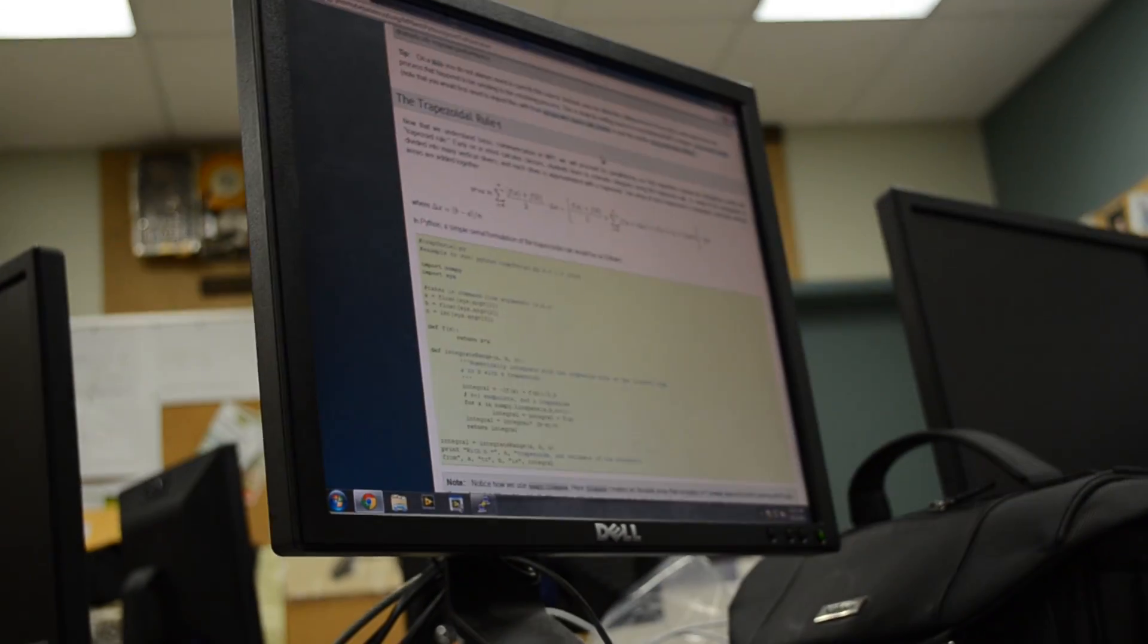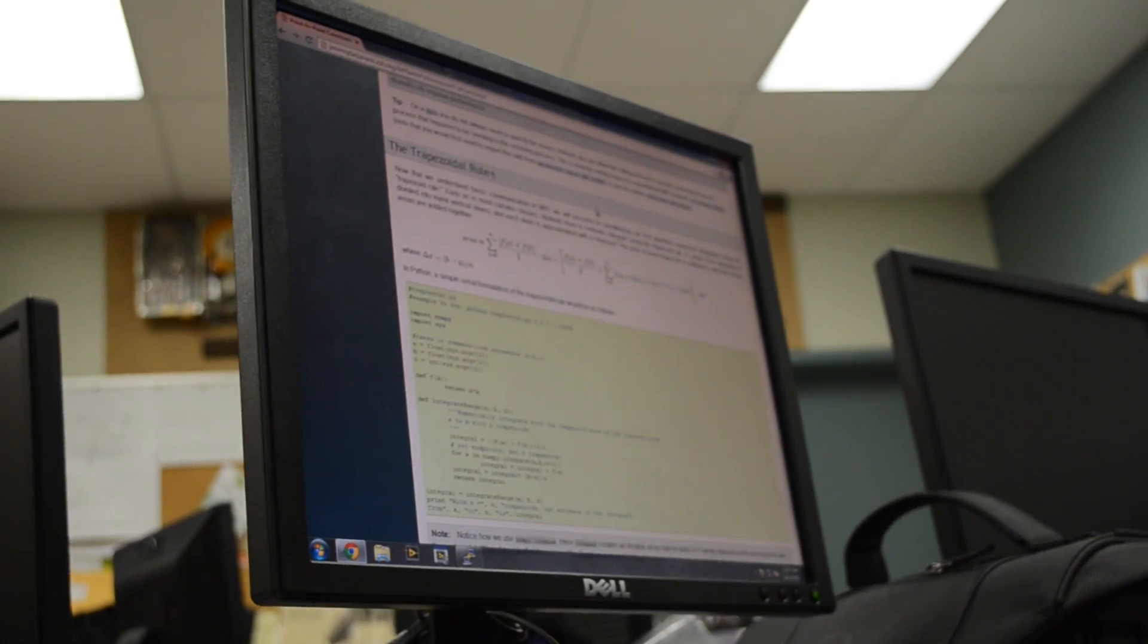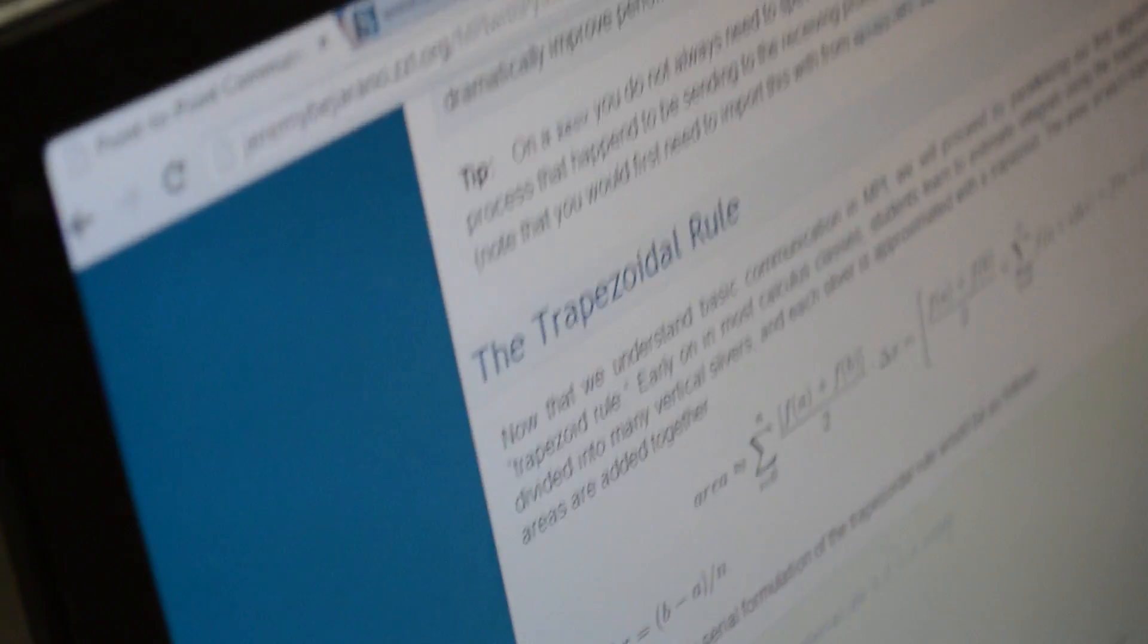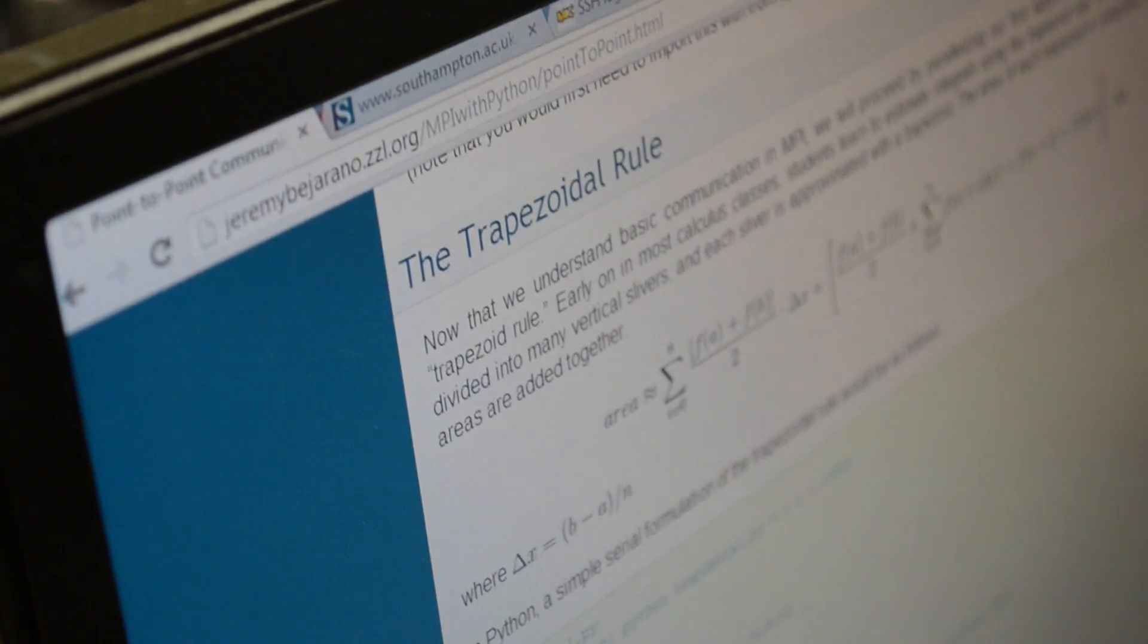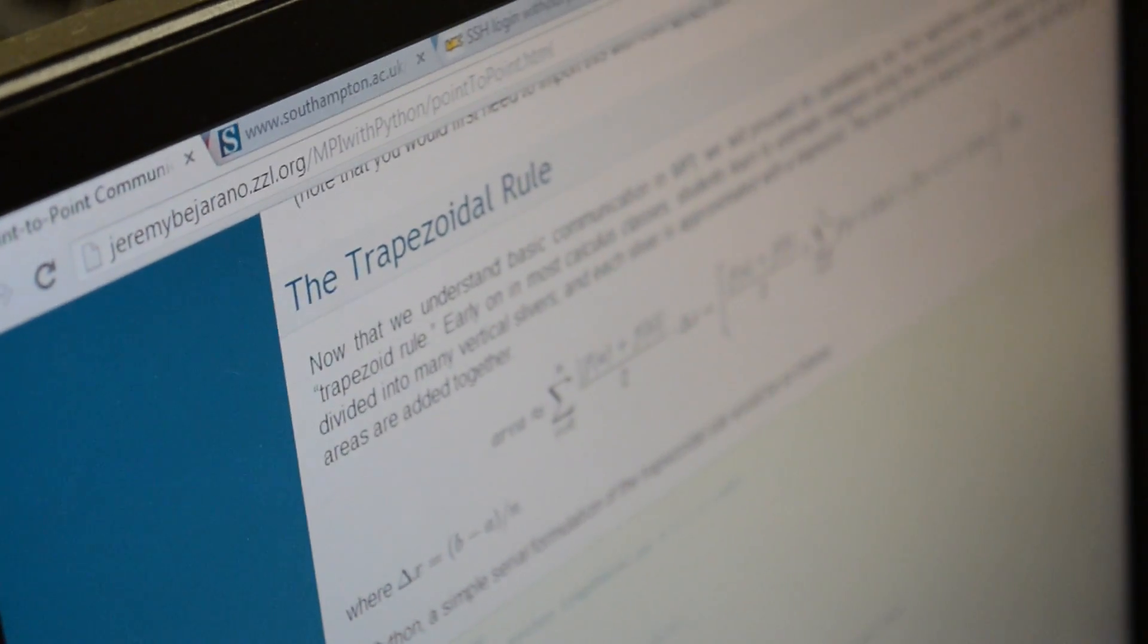So, what our Raspberry Pi supercomputer actually does, as you can see on the computer over here, is it calculates something called the trapezoidal rule, which is a calculus function, where each process will calculate a certain set number of trapezoids, and then it'll send it back to the master process.